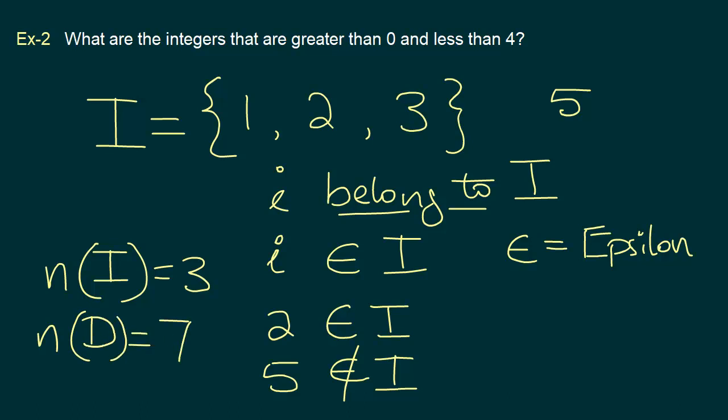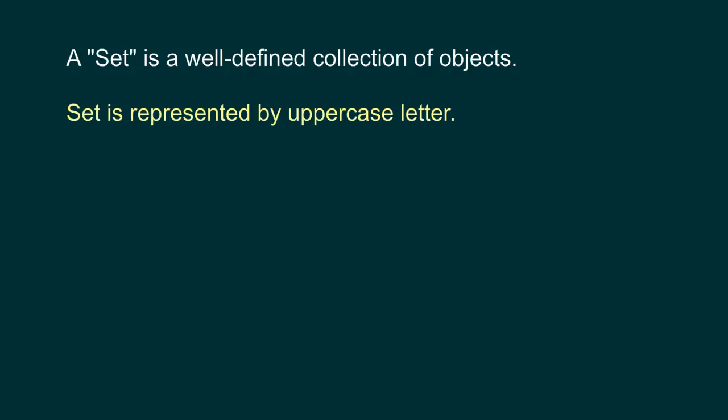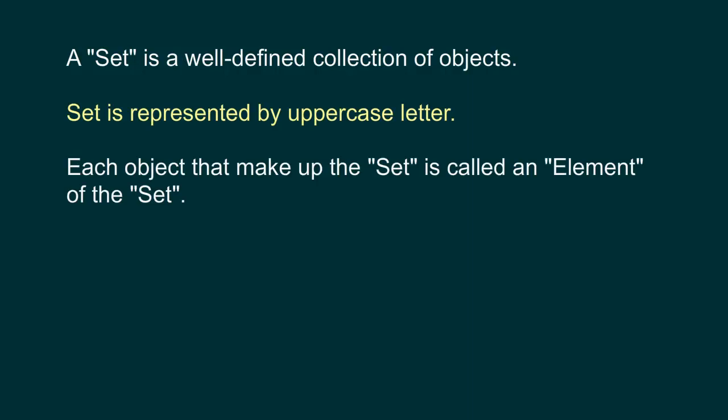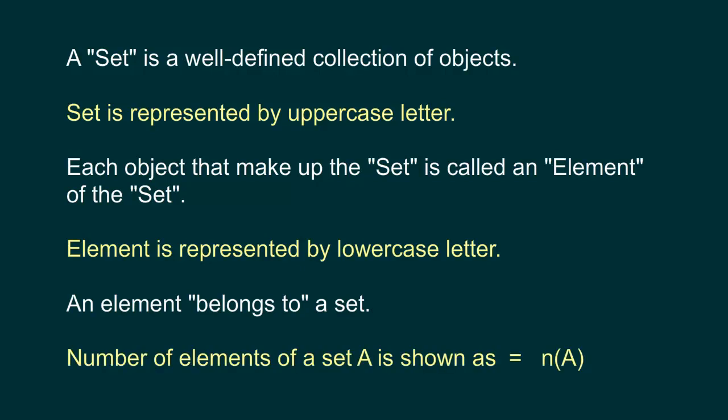Let's do a quick recap of what we have seen so far. A set is a well-defined collection of objects, and is represented by an uppercase letter. Each object that makes up a set is called an element of the set, and is represented by a lowercase letter. An element belongs to a set. The number of elements of a set A is typically represented as lowercase n within brackets, followed by the set itself.